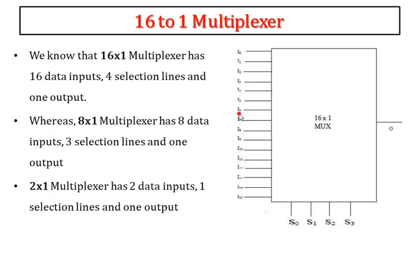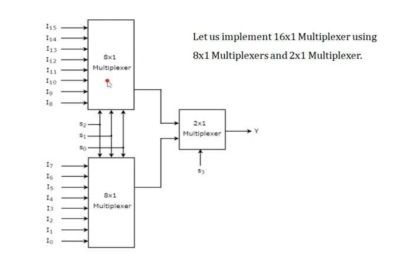Next is the 16-to-1 multiplexer, which I will explain both directly and indirectly. The 16-to-1 MUX has 16 input lines — that is 2 power 4 — with 4 selection lines and 1 output line. For the indirect implementation, I am using two 8-to-1 multiplexers (8 inputs each, totaling 16) with 3 selection lines each, plus 1 additional selection line. Analyze this and try to implement the Boolean expression and draw the logic circuit.